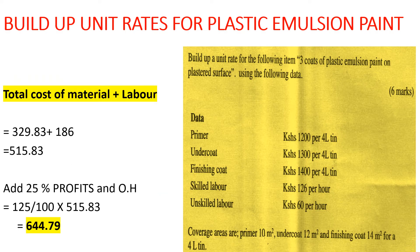Adding the cost of materials — 329.89 shillings — plus the cost of labor — 186 shillings — gives us a total of 515.83 shillings. We must then add profit and overheads. We add 25%, so 125 over 100 times 515.83 gives us a final unit rate of 644.79 shillings.